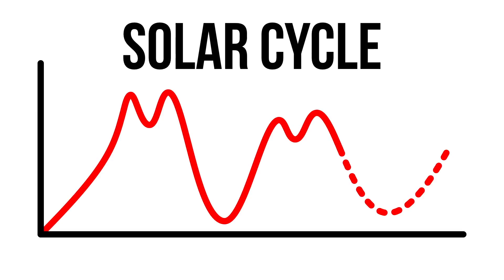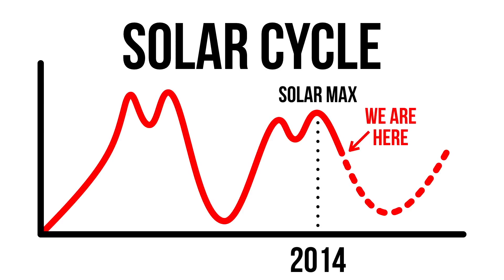As you can see in the graph, sun activity comes and goes in a wave. We are right past the peak of the wave, called the solar maximum, which occurred in 2014. And we're starting the downwards journey, which hits the bottom, called the solar minimum, in 2020.